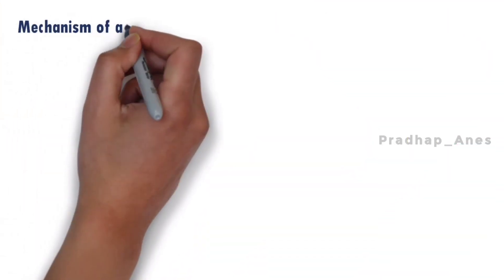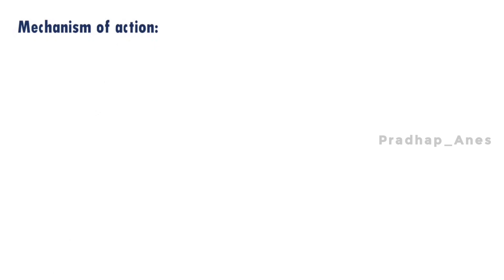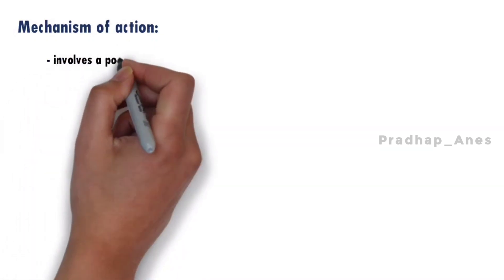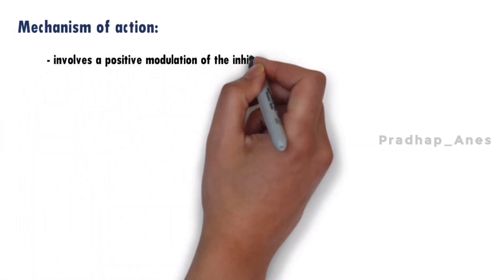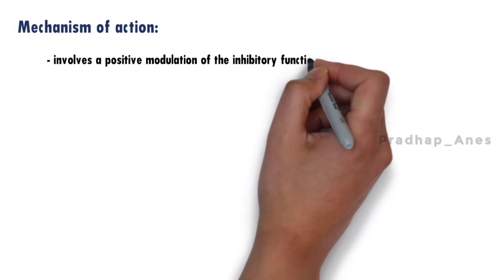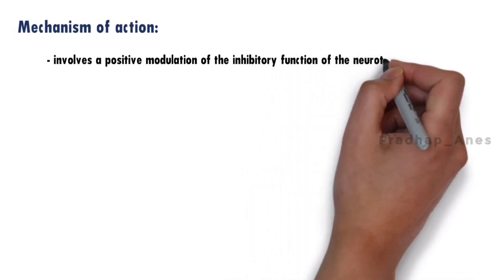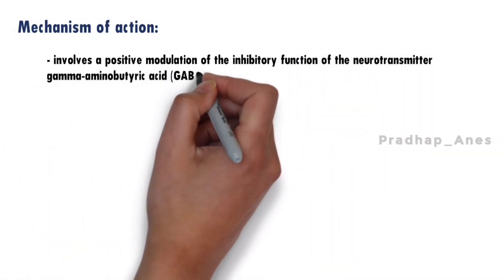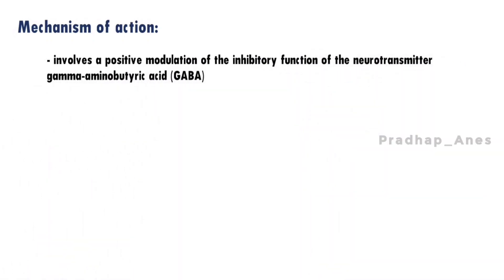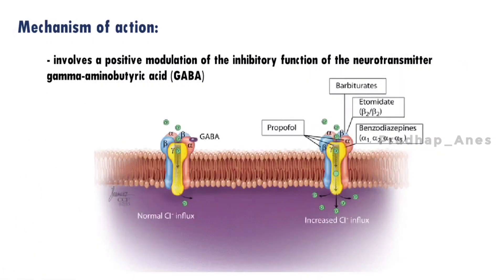Mechanism of Action: The action of thiopentone involves positive modulation of the inhibitory function of the neurotransmitter gamma-aminobutyric acid (GABA). At high doses, it directly potentiates chloride conductance.